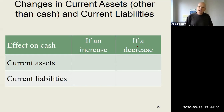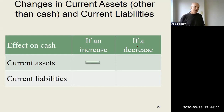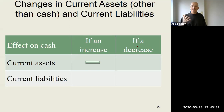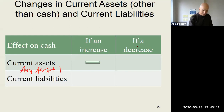For changes in current assets other than cash and current liabilities — we're looking at the operating section. If I have an increase in a current asset, that's going to be a minus. Think of accounts receivable: if my accounts receivable went up from last year's balance sheet to this year's, that tells you you had sales — you have net income — that you haven't collected cash for. If accounts receivable went up, or if inventory went up, or prepaid expenses went up, those are all negative. Anytime a current asset goes up, it's a negative.